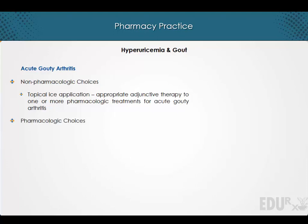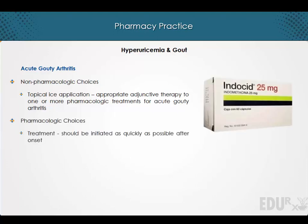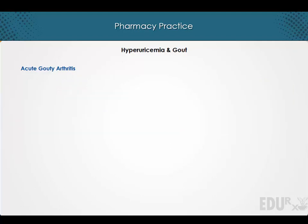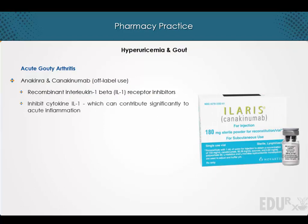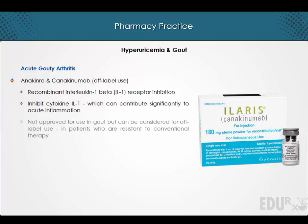Pharmacologic treatment should be initiated as quickly as possible after onset. Recombinant interleukin-1 beta receptor inhibitors such as anakinra and canakinumab inhibit the cytokine interleukin-1, which can contribute significantly to acute inflammation. It should be noted that these agents are not approved for use in gout but can be considered for off-label use in patients who are resistant to conventional therapy.